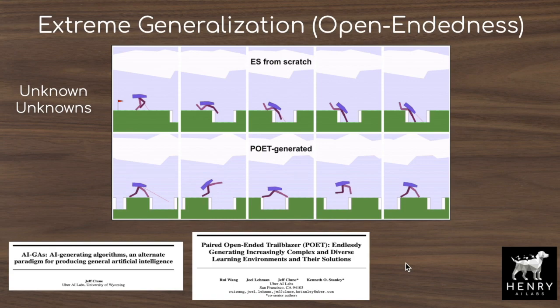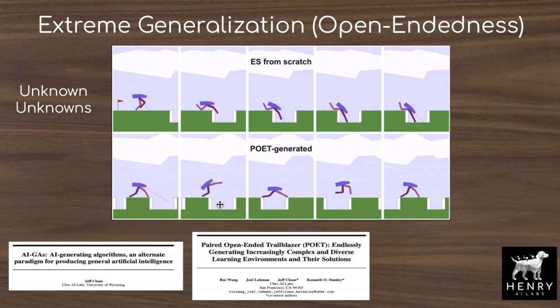Local to broad generalization is really a single one-dimensional metric — zero being local, ten being broad — where generative model data augmentation could overcome this transition for most vision, language, and speech tasks. But extreme generalization is more ambitious. The best example is the POET algorithm, where both the controller of the agent and the bipedal walking terrain are co-evolved. This co-evolution enables open-ended exploration where the algorithm could discover unknown walking terrains, learning to solve problems that developers could not have anticipated.